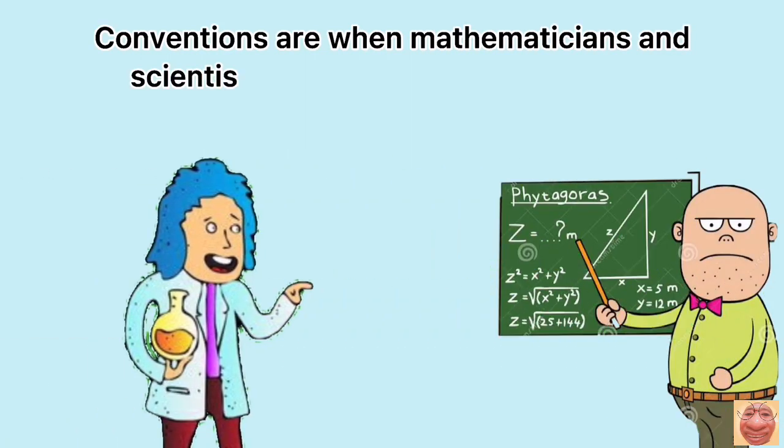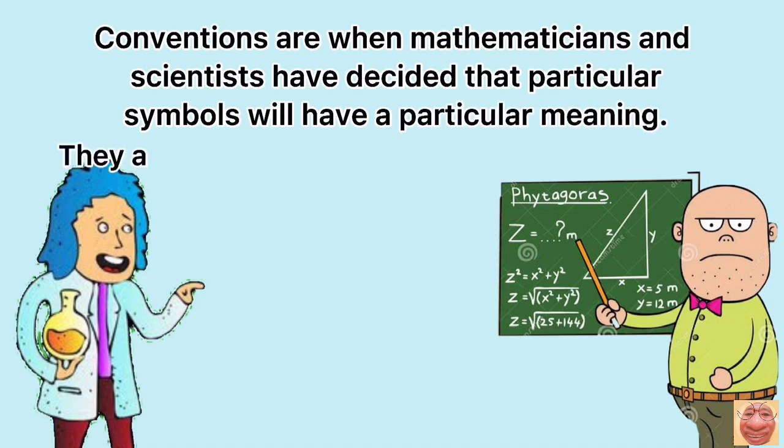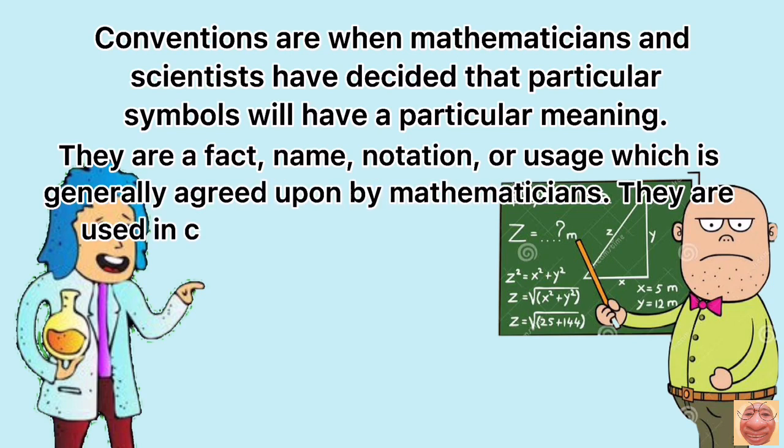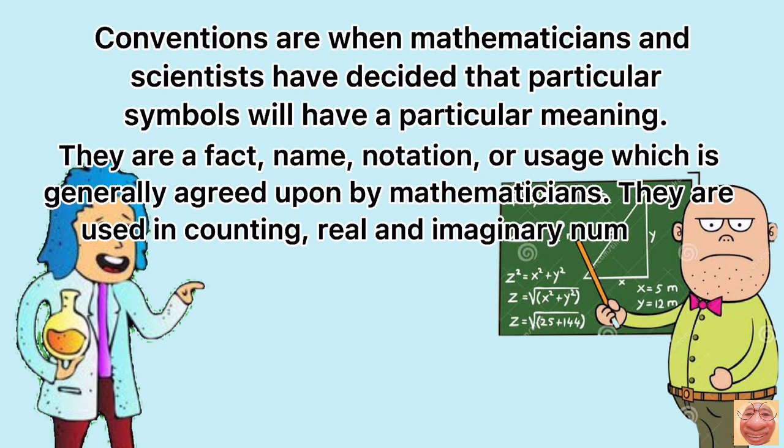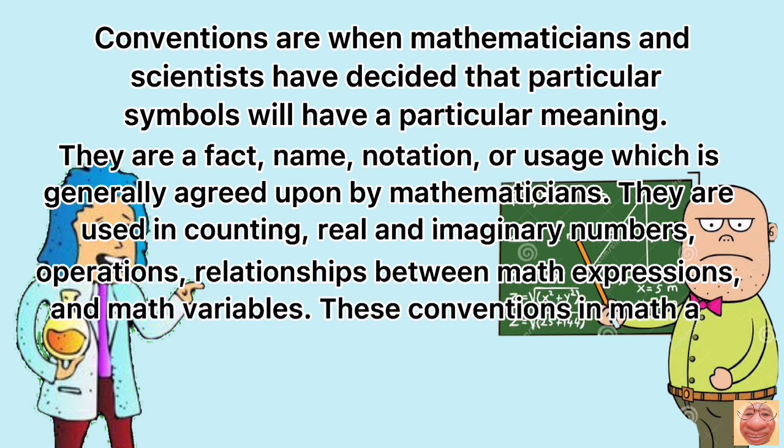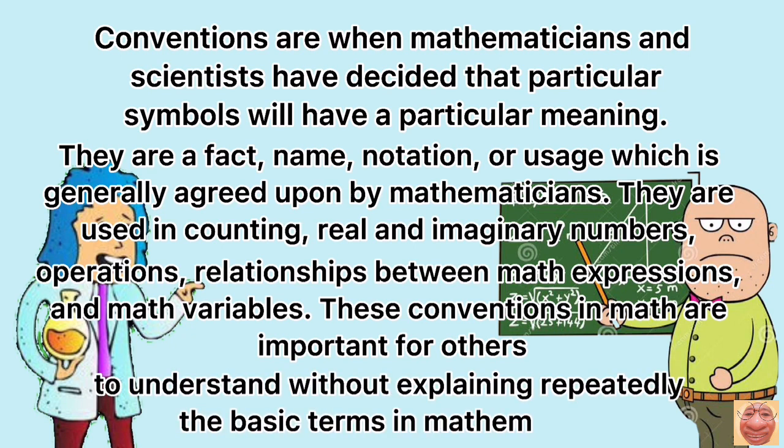Conventions, on the other hand, are when mathematicians and scientists have decided that particular symbols will have particular meaning. They are a fact, name, notation, or usage which is generally agreed upon by mathematicians. They are used in counting real and imaginary numbers, operations, relationships between math expressions, and math variables. These conventions in math are important for others to understand without explaining repeatedly the basic terms in mathematics.